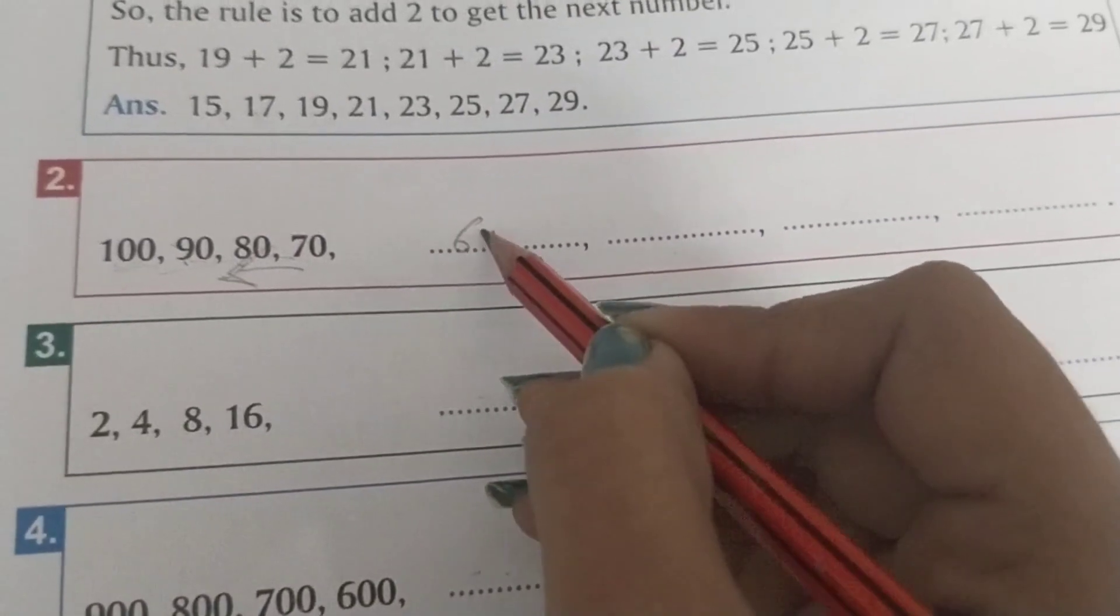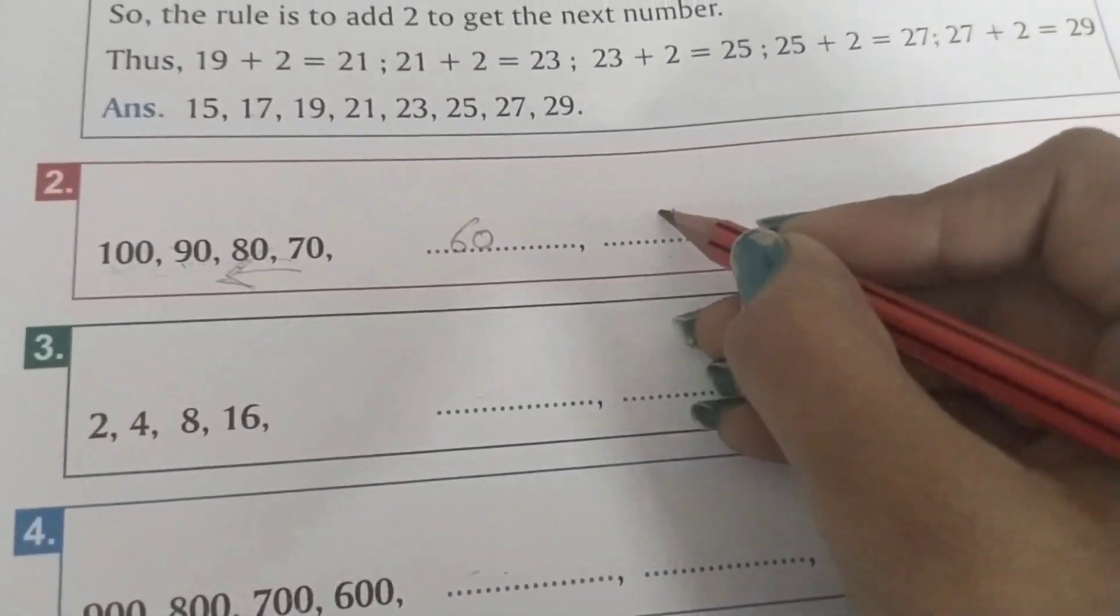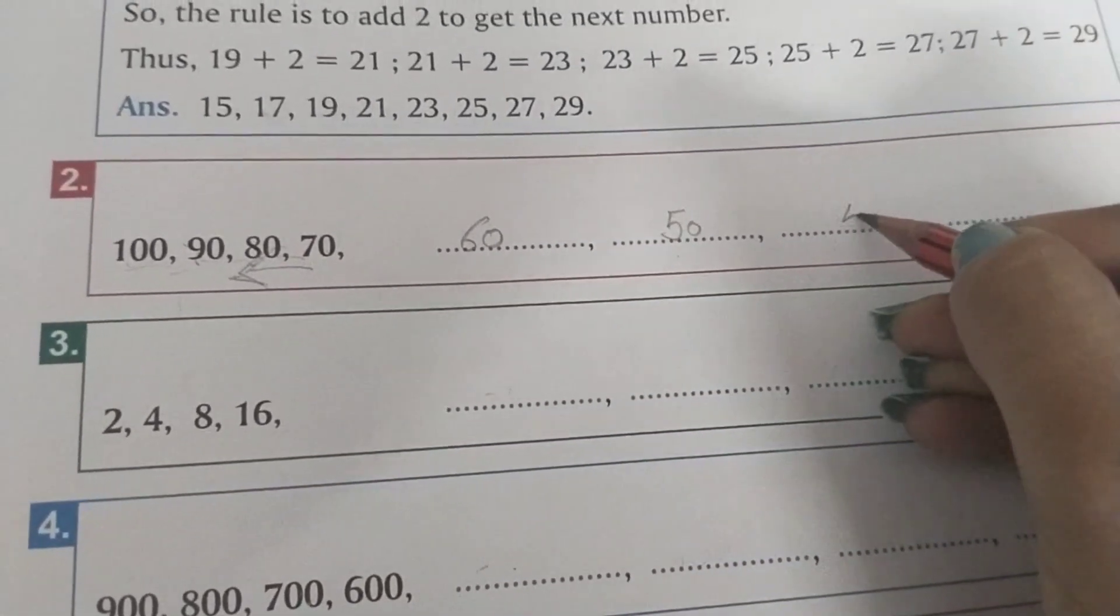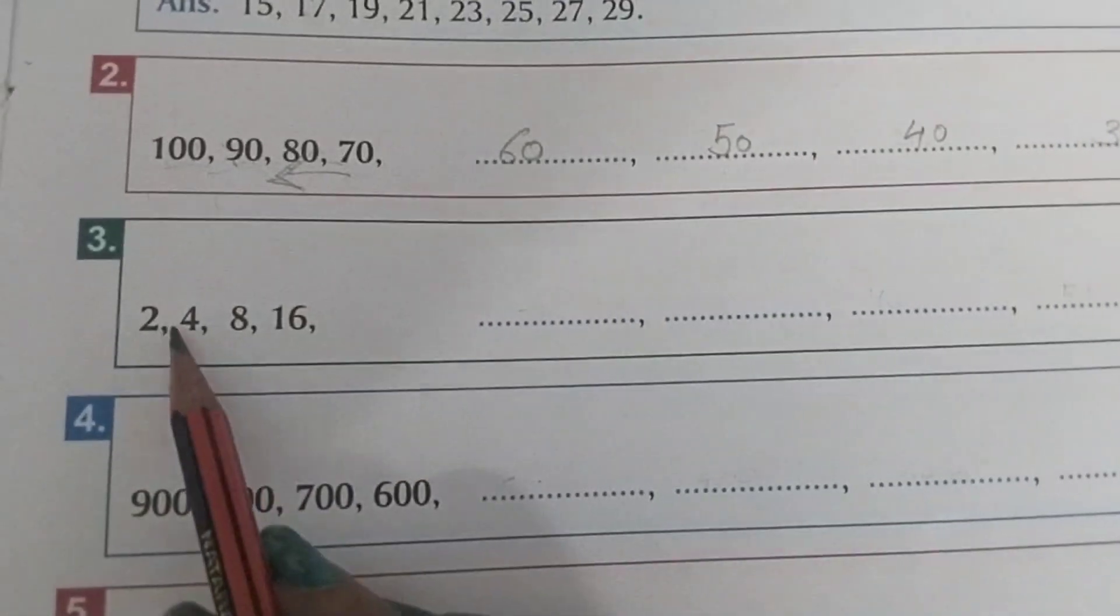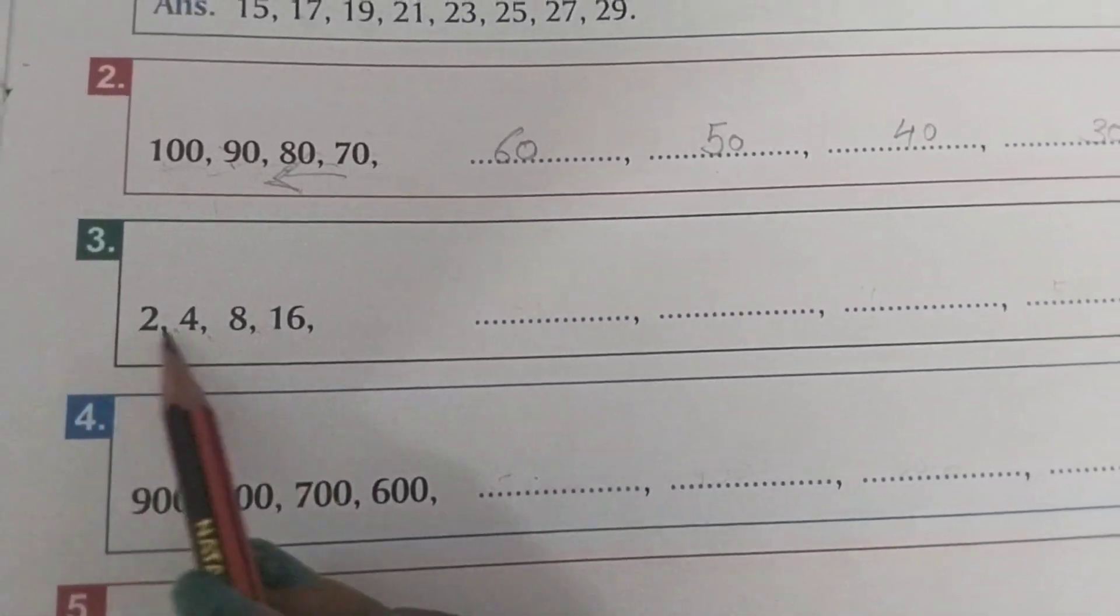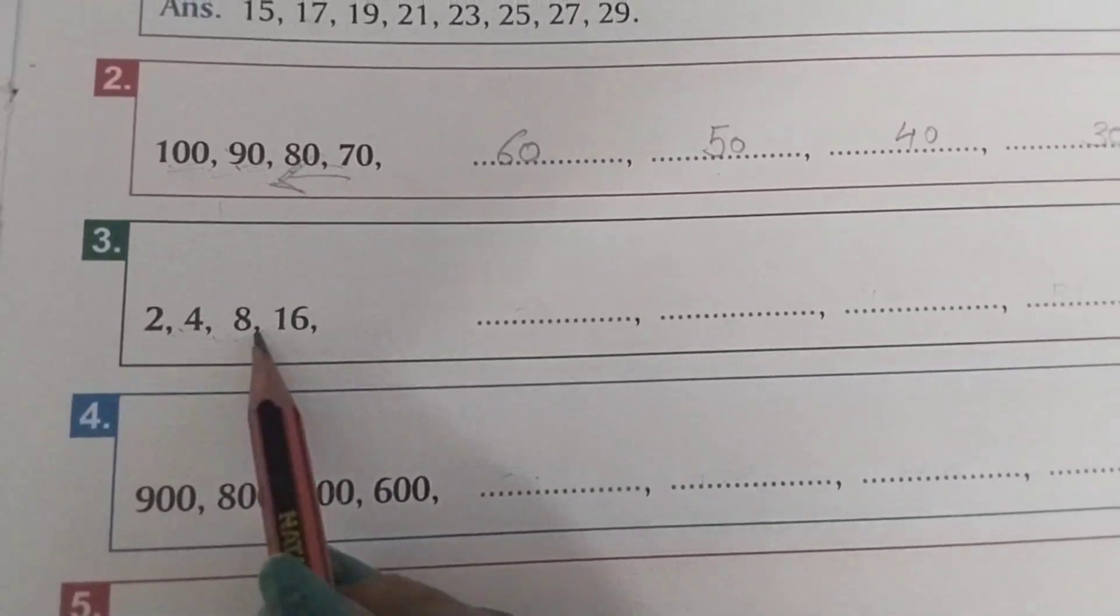And here 2, 4. Table of 2, skip counting is there. 2, 4, 8, 16, 24, and so on.